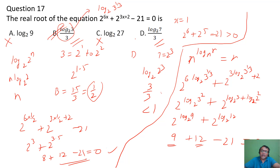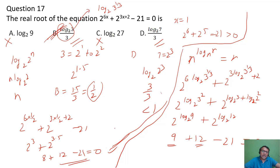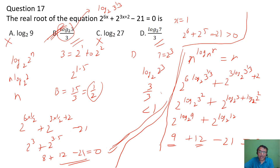Automatically you can see that the answer is option B by substituting. I prefer approximations, as you can do the calculation mentally. But if you want to use the logarithm equations formally, that works too. Either way, whichever you're comfortable with, 9 + 12 - 21 = 0 gives you the answer.